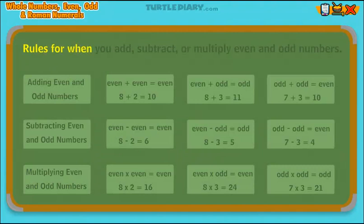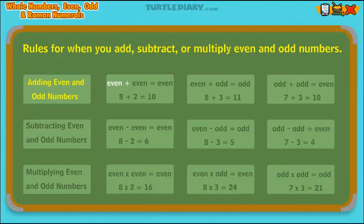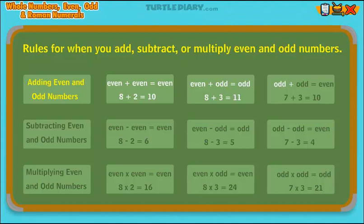Rules for when you add, subtract, or multiply even and odd numbers. Adding even and odd numbers: even plus even equals even, even plus odd equals odd, odd plus odd equals even.